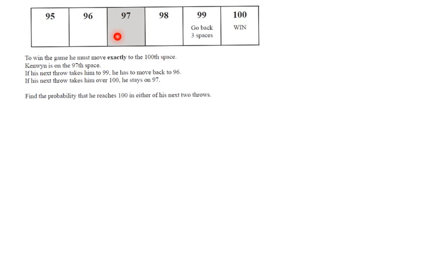Kenwin now is on place 97. So he's over here, the shaded square. If his next throw takes him to 99, he has to move back to 96. So if he rolls a two, which are two ones, then he will have to go back to 96. Because we go back three spaces, it says one, two, three. Okay, that makes sense.